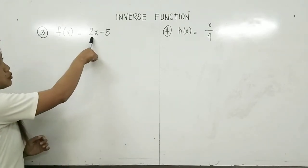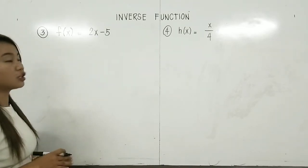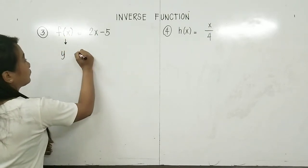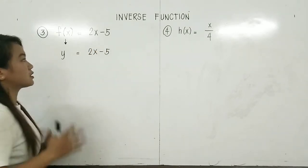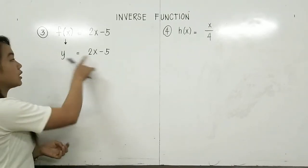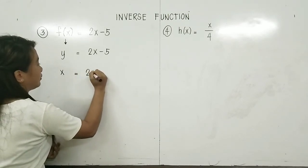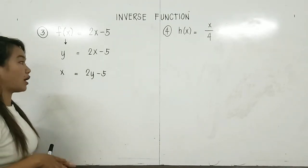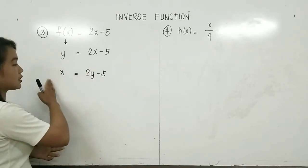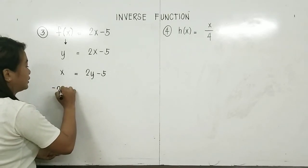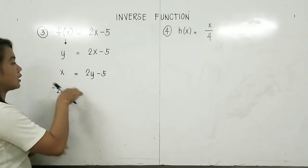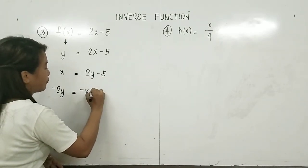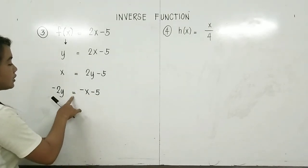Example 3: f(x) = 2x − 5. This is an example of a linear function. Step 1: let f(x) be y, so y = 2x − 5. Step 2: interchange the variables y and x, so x = 2y − 5. Step 3: solve for y in terms of x. Transposing gives negative 2y on the left side, so −2y = x − 5... we rearrange so that negative 2y = negative x minus 5.